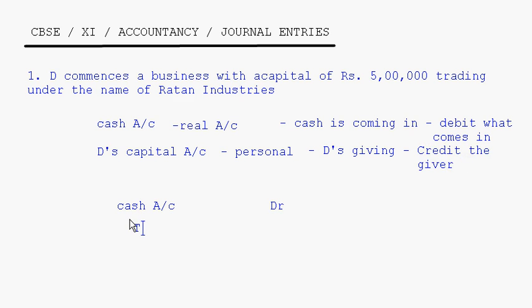Whenever you put the credit side, we write 'To D's Capital Account' — that is the account.